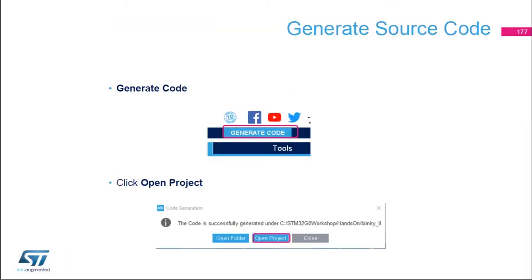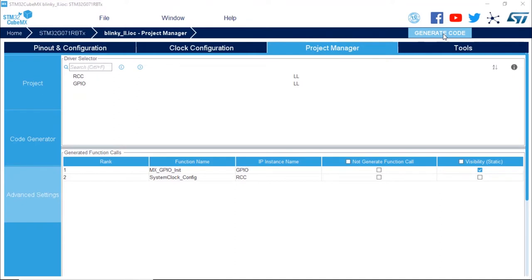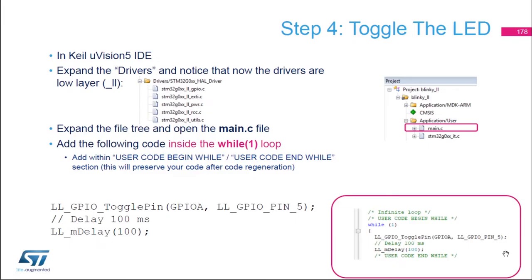We can now generate the code and open the project by clicking Generate Code, then open the project in Keil Microvision 5. In the drivers section, you will see that the driver files now have a mention of underscore LL, which means we are using the low layer drivers and not the HAL anymore.